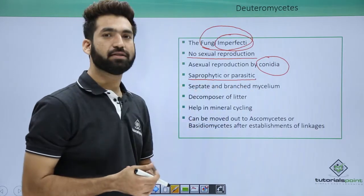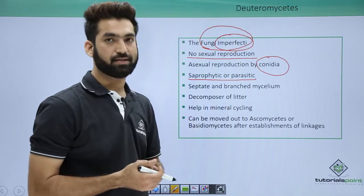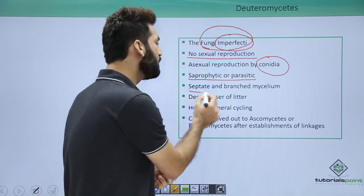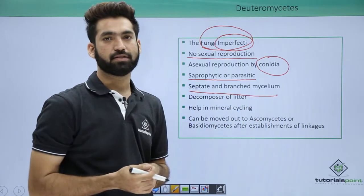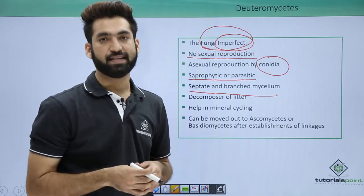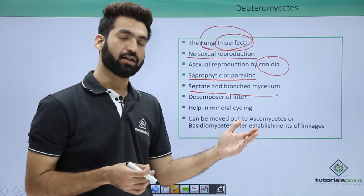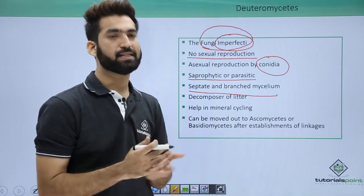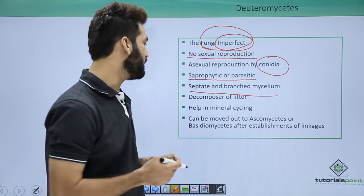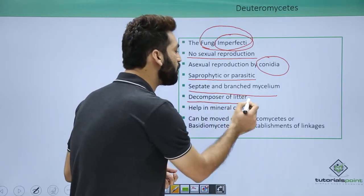When you talk about the mode of nutrition, they can be saprophytic or parasitic. Their hyphae are septate and branched. Remember, only Phycomycetes were aseptate — all other classes, Basidiomycetes, Ascomycetes, and Deuteromycetes, are septate.